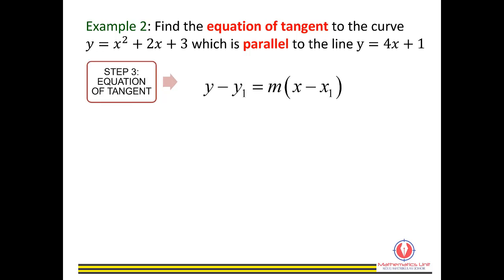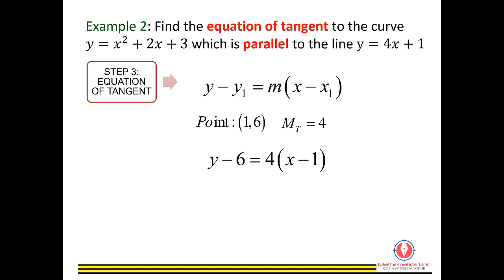Therefore, the equation of tangent uses the formula y minus y1 equals m times (x minus x1). Using the point (1, 6) and gradient 4, substitute into the formula: y minus 6 equals 4 times (x minus 1). Rearrange, and the equation of tangent is y equals 4x plus 2.